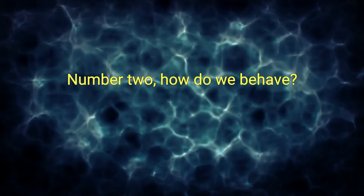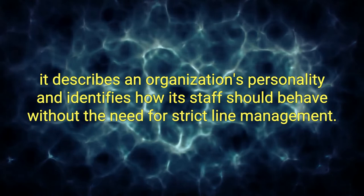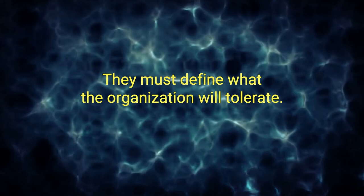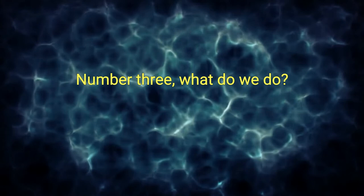Number two: how do we behave? The answer to this question is embodied in an organization's core values. More than anything else, it describes an organization's personality and identifies how its staff should behave without the need for strict line management. Core values must be focused. If they are too generic, they are too weak. They must define what the organization will tolerate. Lencioni puts this succinctly: If an organization tolerates everything, it stands for nothing.